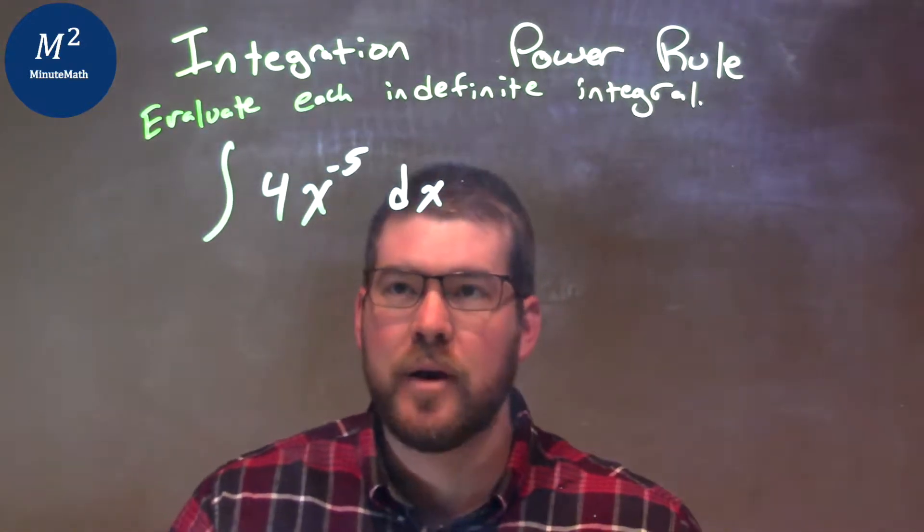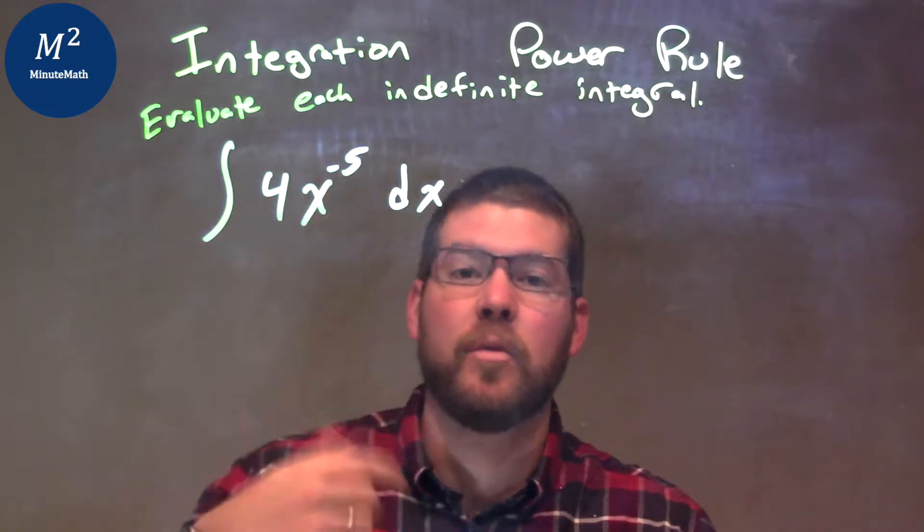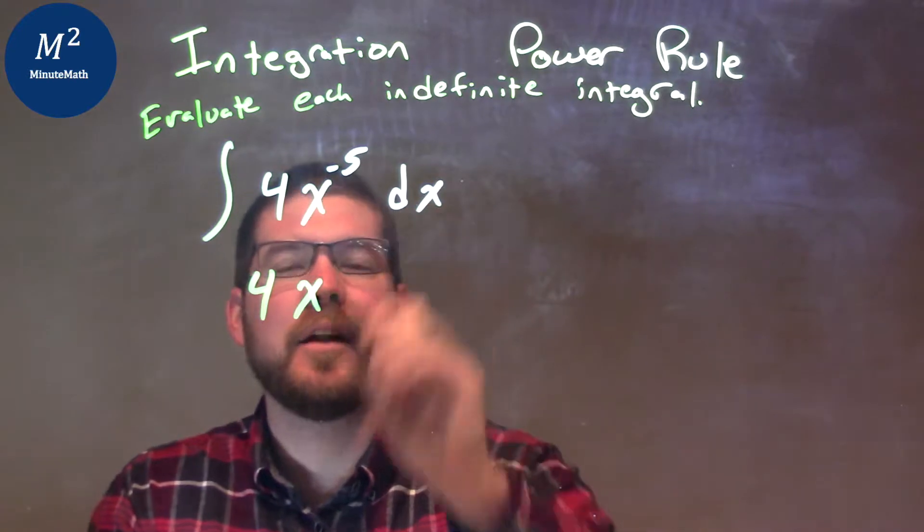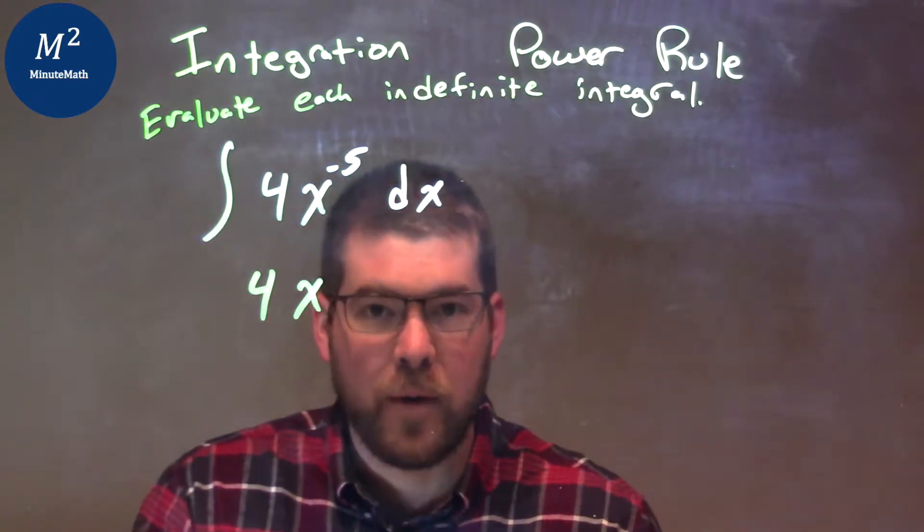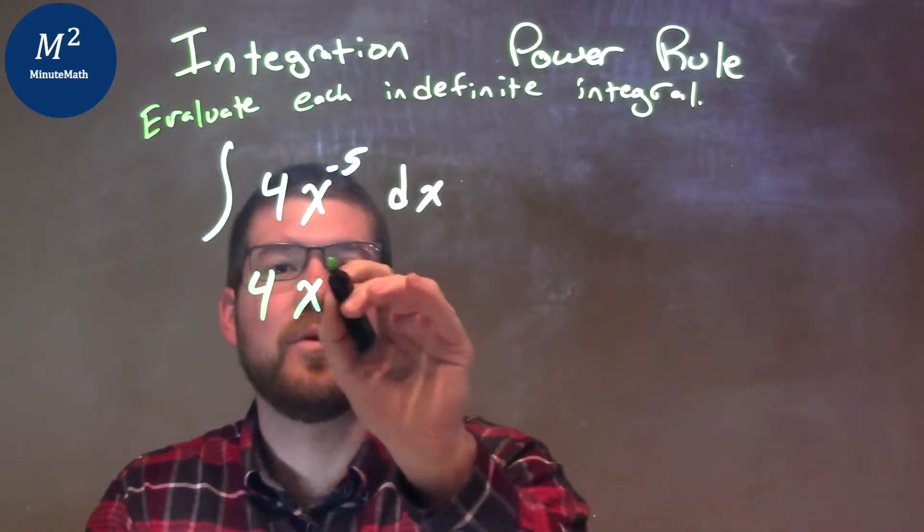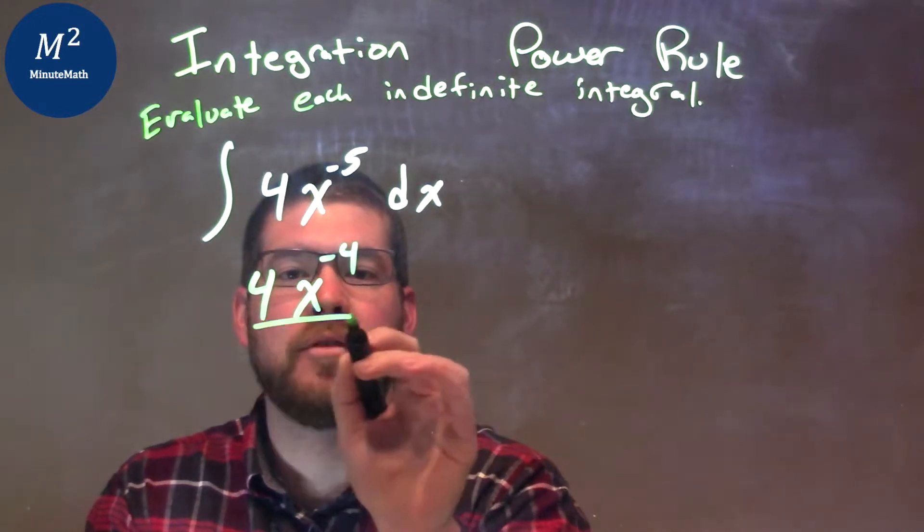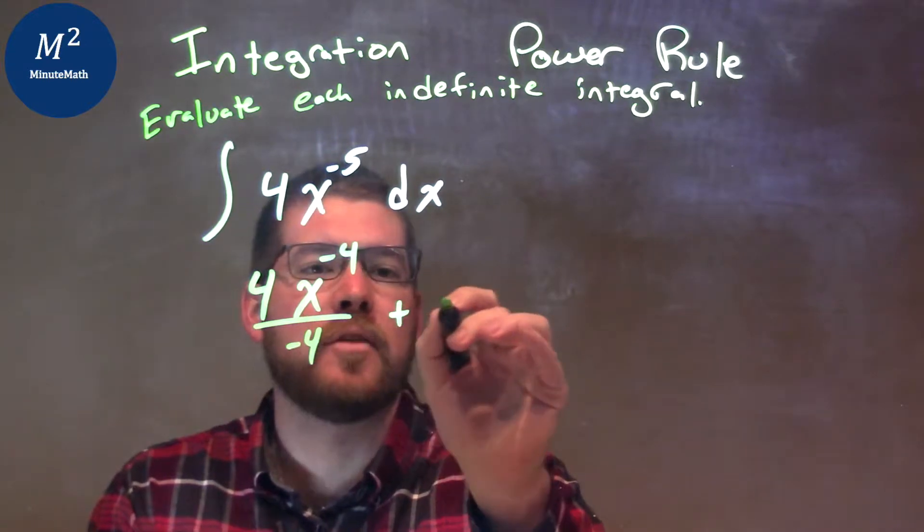Well, by using the power rule, all I'm going to do is add the exponent by 1. So we have 4 comes down as a constant, x here, and now your negative 5 plus 1. Well, negative 5 plus 1 is negative 4, and we need to divide by that same exponent, so divide by negative 4 as well, and plus c.